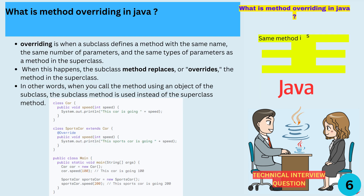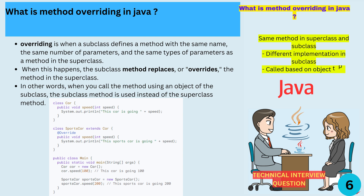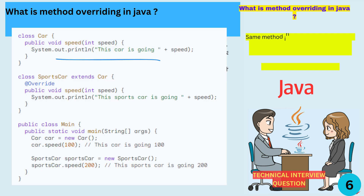Can you explain method overriding and give an example? In Java, method overriding is when a subclass defines a method with the same name, the same number of parameters, and the same types of parameters as a method in the superclass. When this happens, the subclass method replaces or overrides the method in the superclass. When you call the method using an object of the subclass, the subclass method is used instead of the superclass method. I'll write some code that shows how method overriding works.